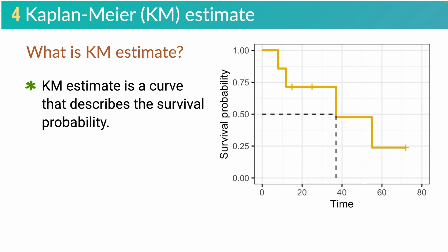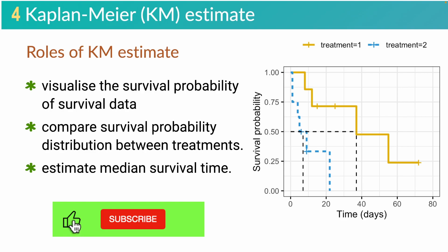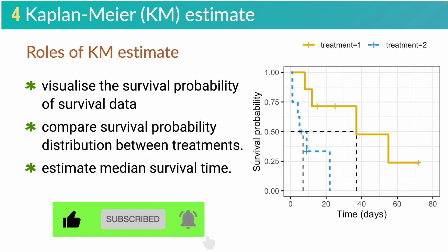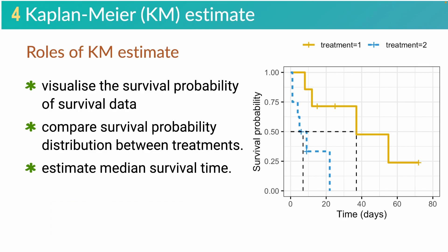So, what is Kaplan-Meier or KM estimate? KM estimate is a curve that describes the survival probability over time. These curves can help us easily see the survival probability of a patient group or different patient groups. The first role of KM estimate is to visualize the survival probability of survival data from a study cohort. Secondly, it can be used to compare the distribution of survival probabilities between two treatments or more. You can also estimate the median survival time — that is the length of time in which half of the patients die.